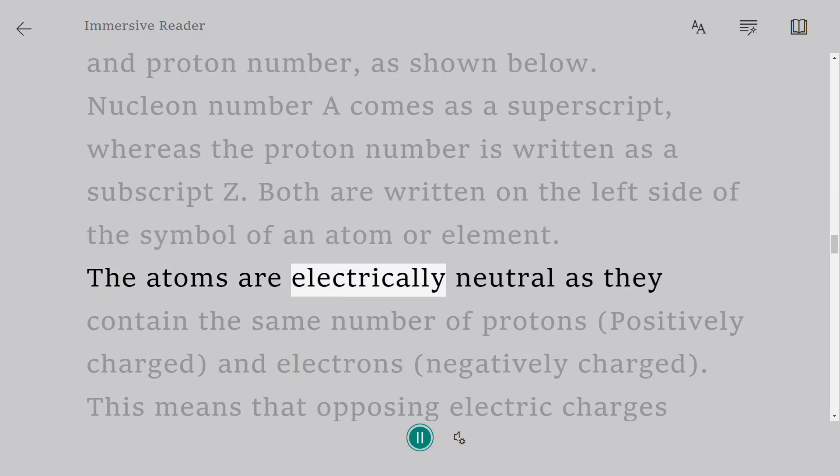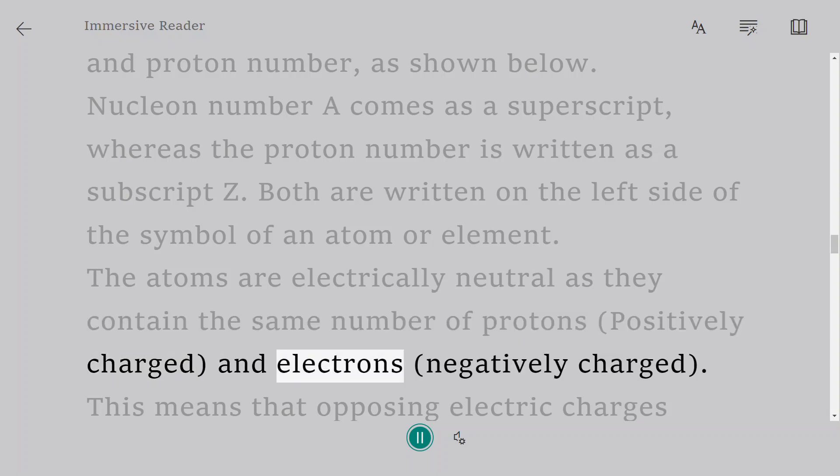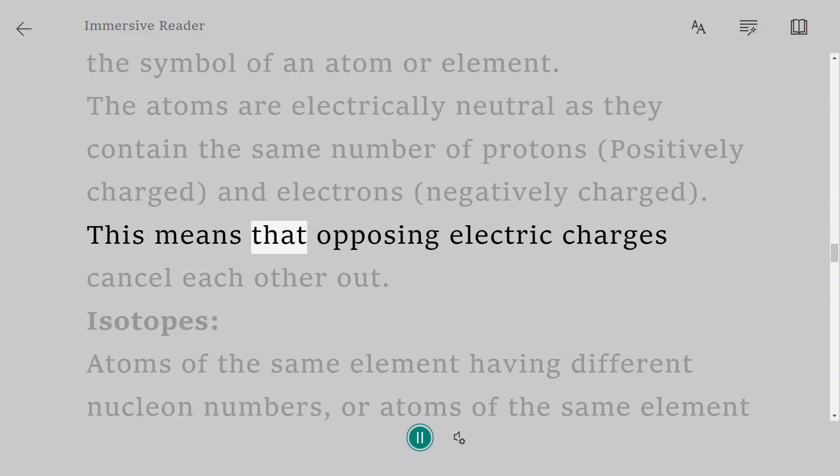The atoms are electrically neutral as they contain the same number of protons (positively charged) and electrons (negatively charged). This means that opposing electric charges cancel each other out.